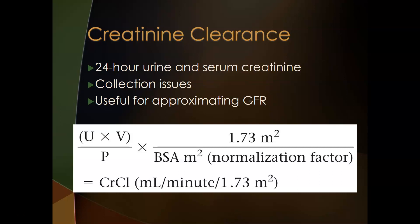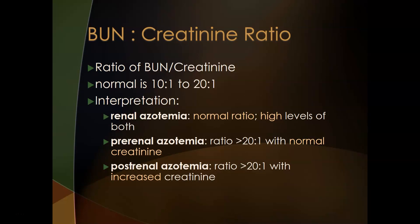The creatinine clearance calculation approximates the glomerular filtration rate and gives an indication of kidney function. The formula is: (urine creatinine × urine volume) ÷ (plasma creatinine × 1.73 m²) × body surface area in square meters (calculated from height and weight). The result is expressed in milliliters per minute, normalized to body surface area.